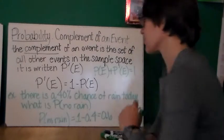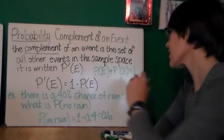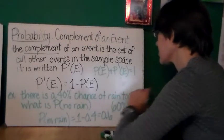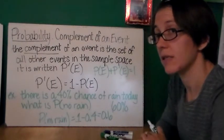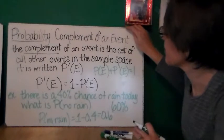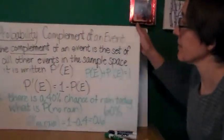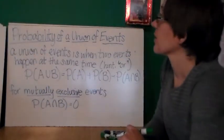And so if there's a 40% chance of rain today, the probability that it's not going to rain is 0.6 or 60%. And that's the complement of the event. What's the probability that the event will not happen.